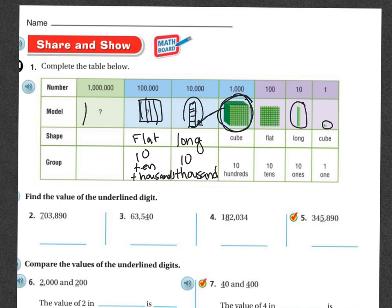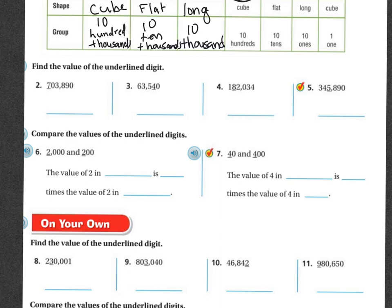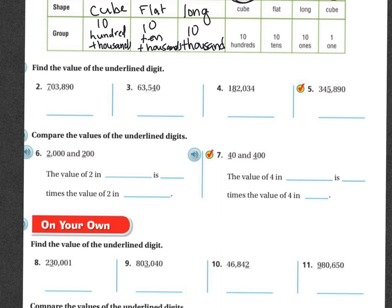Then this one is going to be another cube where each of the ones is representing a thousand. So you have ten thousand here, then ten ten thousands, and now ten hundred thousands. So if this digit is in the hundred thousands place and it's a seven, then the value is seven hundred thousand. The rest you're going to do on your own or with a partner, and I will be on the carpet if you need any help. Good luck!